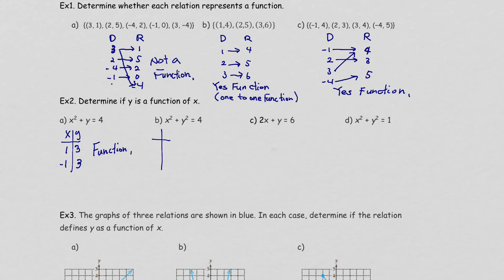For the next equation, let's try x = 0. When x = 0, you get y² = 4, which gives y = ±2, because you need to take the square root. Plugging in zero gives two solutions, so you don't even need to try another number — because you get two solutions, it is not a function.